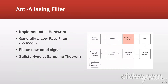Since the electrode we are using measures all sorts of electrical potentials, it's important to include an anti-aliasing filter. This is generally a low-pass filter with an upper end of around 1 kilohertz. This is going to filter out our unwanted signals. We choose 1 kilohertz to satisfy the Nyquist sampling theorem, as that's about two times the maximum frequency we will see from an EMG signal. This is, again, implemented in hardware.